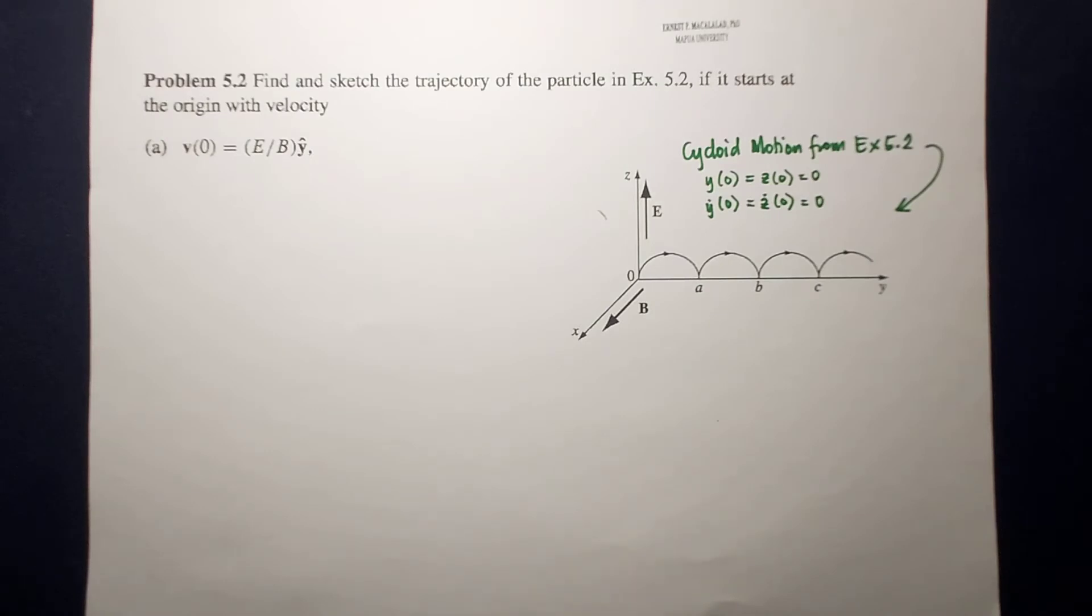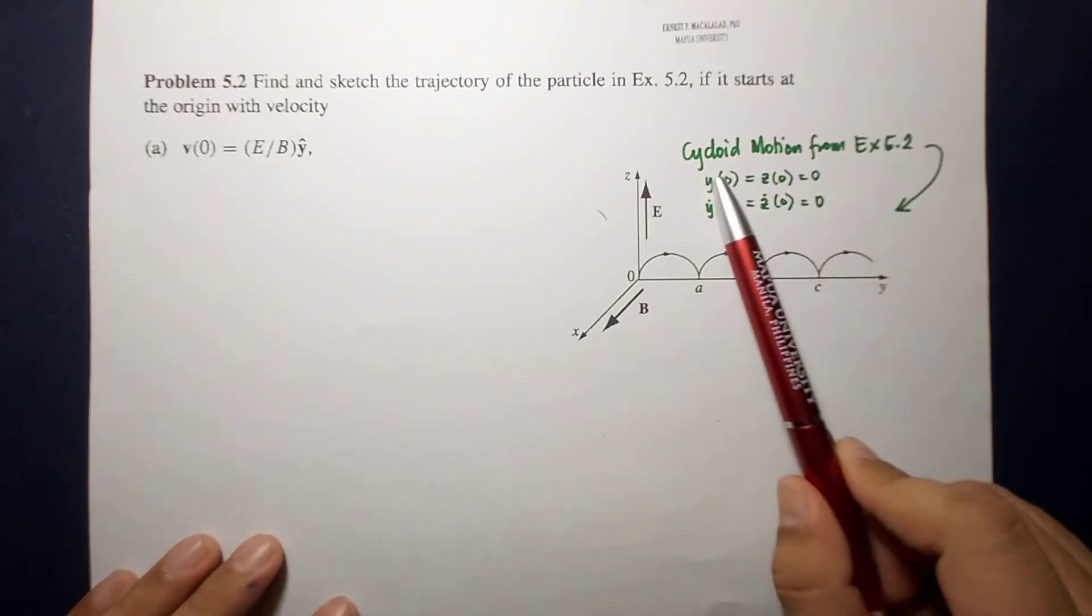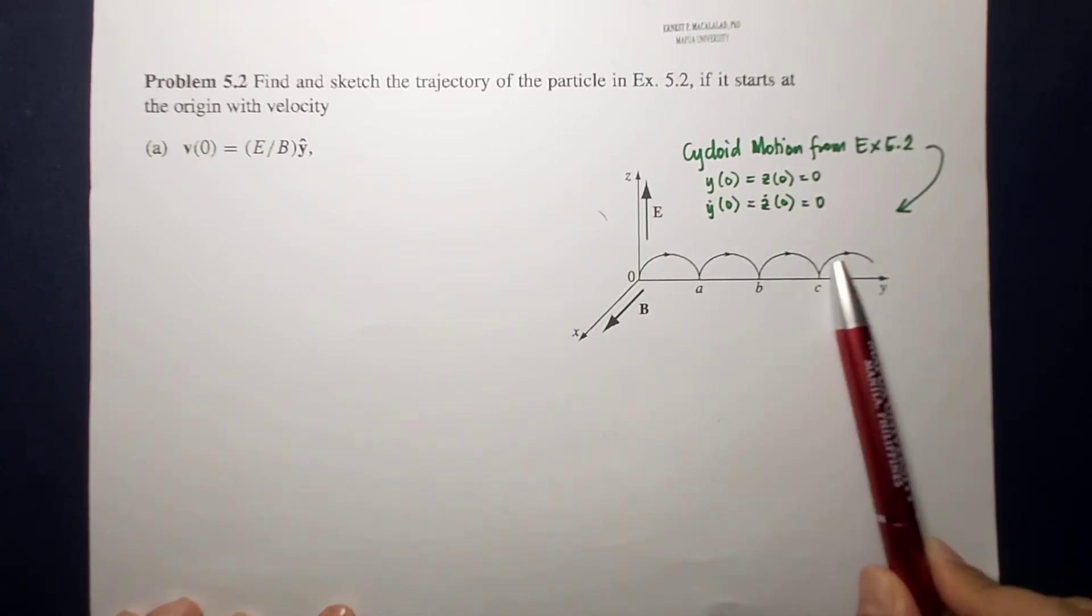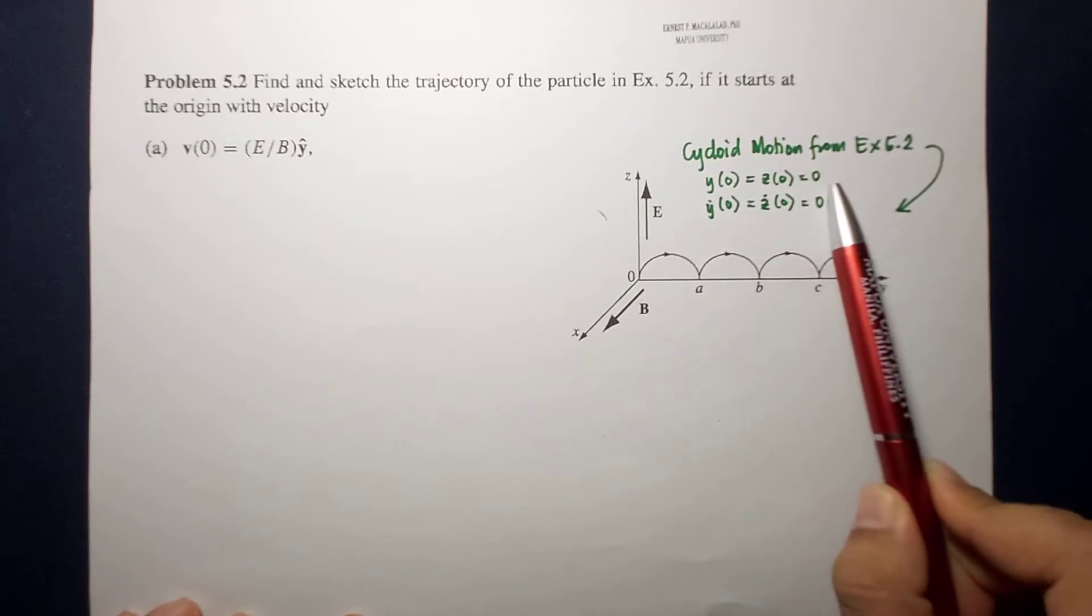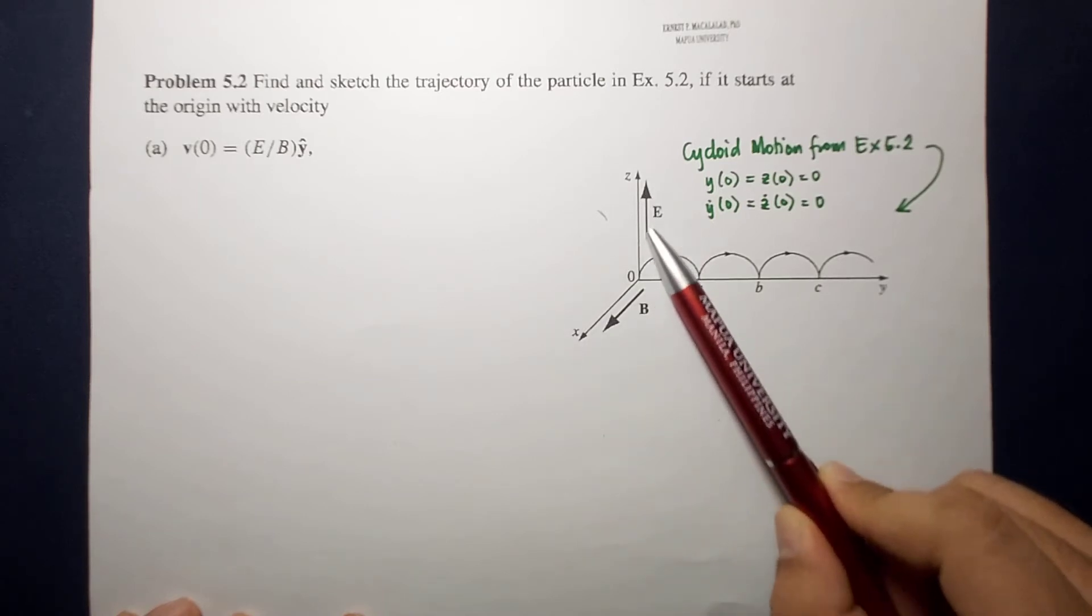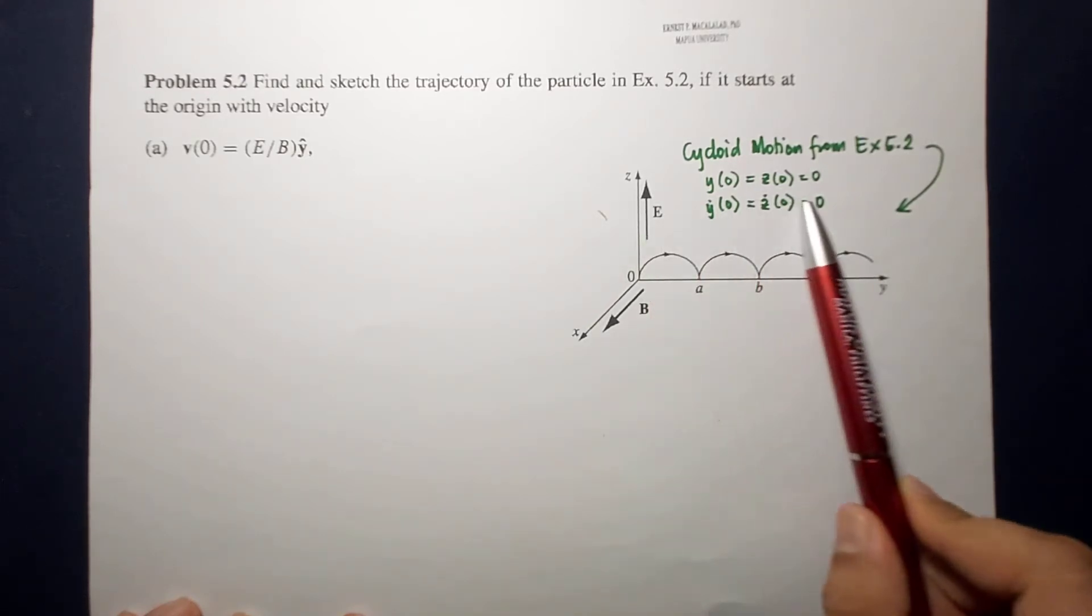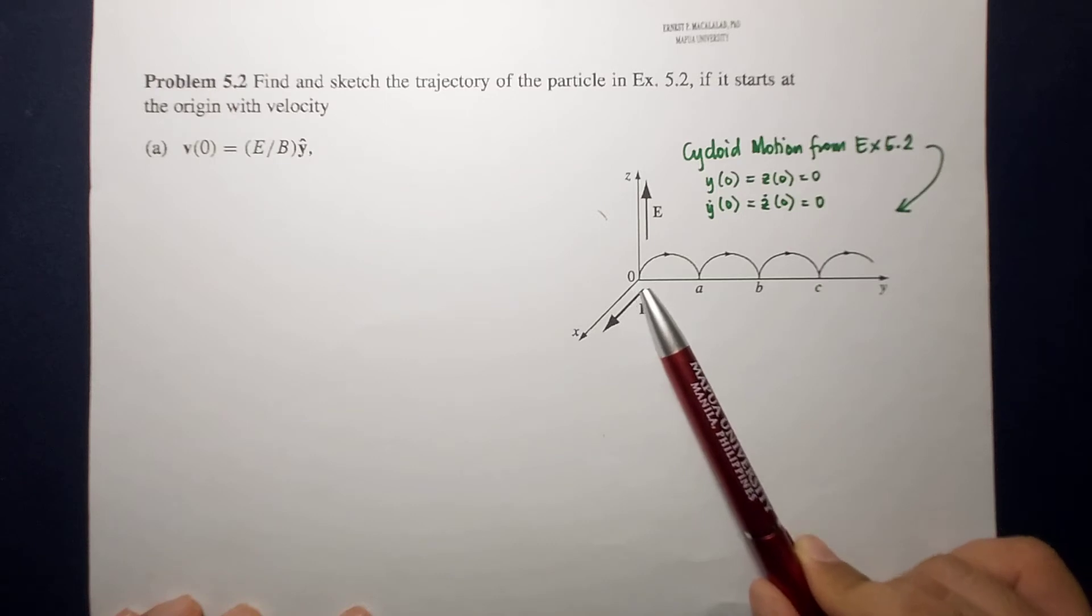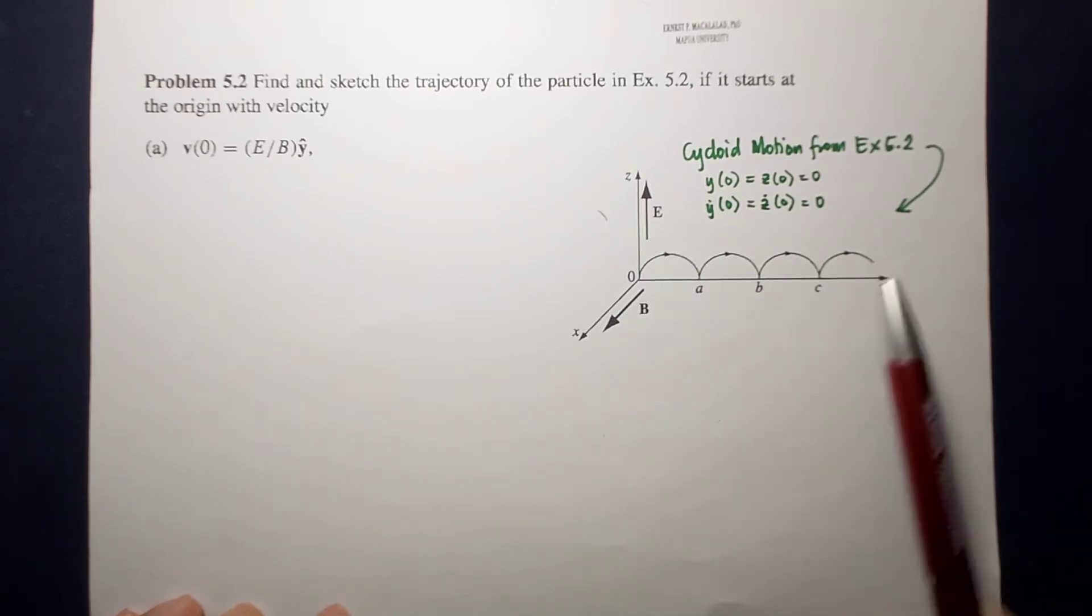So, as you recall, when we did our example 5.2, the resulting motion is of the form of a cycloid. And this is derived when we set the initial conditions that the particle started at the origin. Because of the configuration of the magnetic field and electric field, the particle is constrained to move along the y-z plane. When the particle started at the origin and it started from rest, due to the Lorentz force from the magnetic and electric field, the particle moved in a cycloid motion.